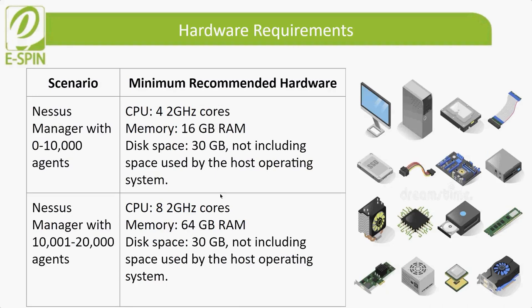For Nessus Manager hardware requirements, there are also two scenarios. For zero to ten thousand agents, users need 4 cores at 2 GHz, 6 GB RAM, and 30 GB disk space, not including host OS space. For the second scenario of ten thousand one to twenty thousand agents, users need 8 cores at 2 GHz, 64 GB RAM, and 30 GB disk space, not including space used by the host operating system.